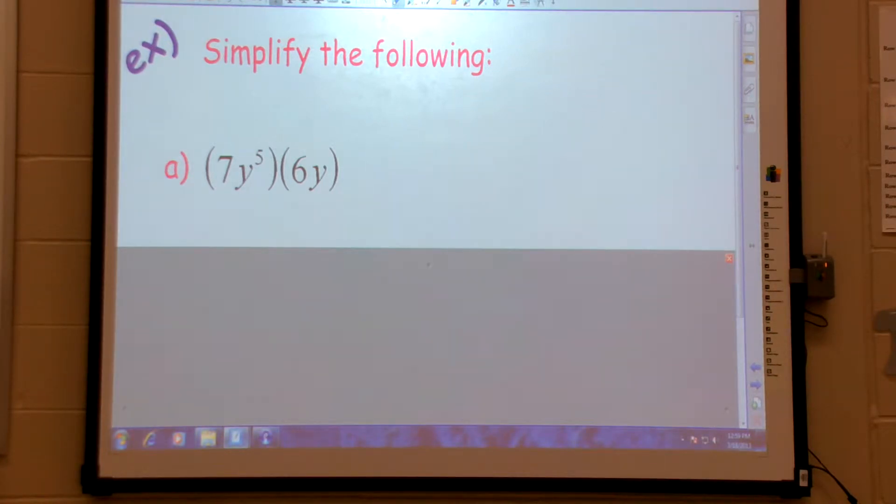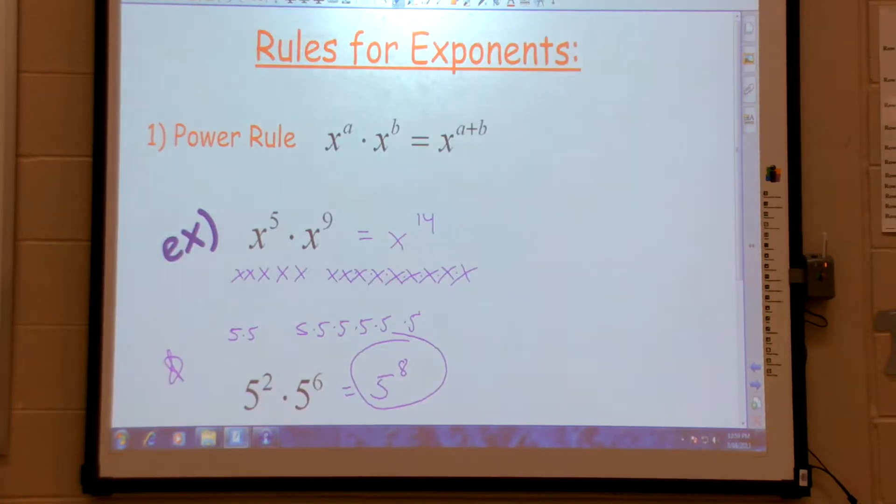Okay, now here's where we get confused. Back here, we did not multiply the 5s. Does everyone agree with that? Because the 5s are bases, they are not coefficients.